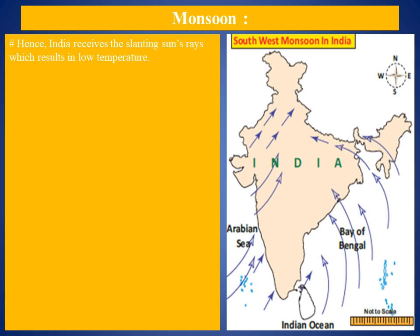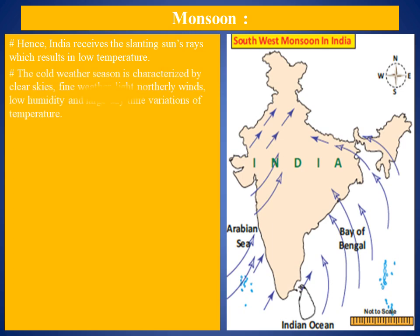During this season, a high pressure develops over north India and the northwesterly winds blow down the Indus and Ganges valley. As shown in the pictures, the general direction of wind is from east to west. The mean temperature increases from north to south, with a sharp decrease as one moves northward. The mean daily minimum temperature ranges from 22°C in the extreme south to 10°C in the northern plains and 6°C in Punjab.